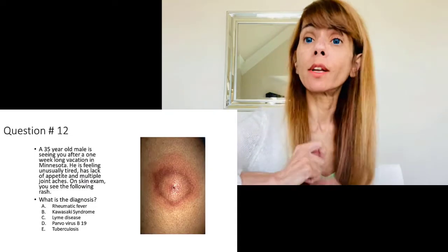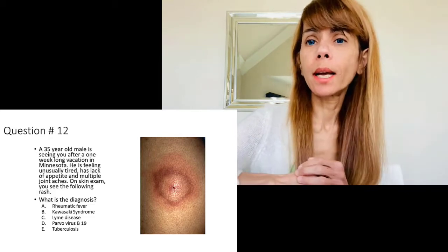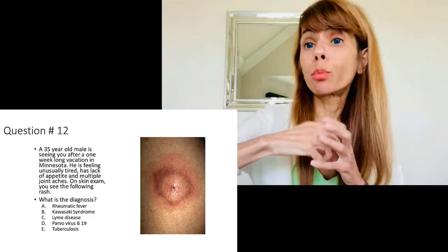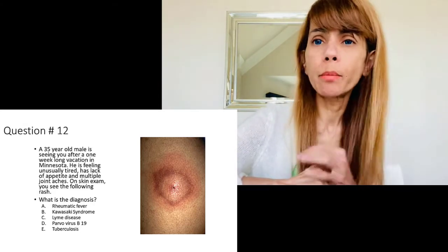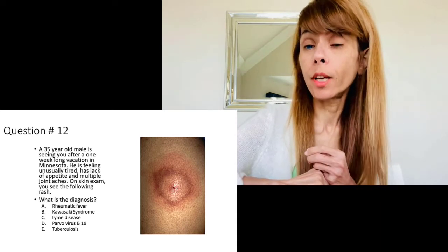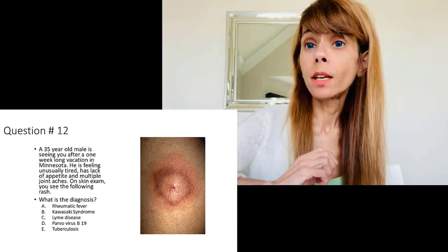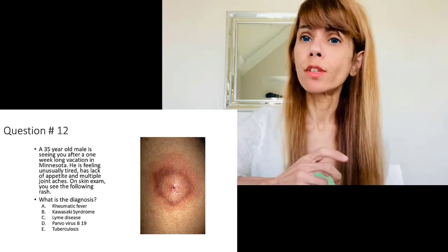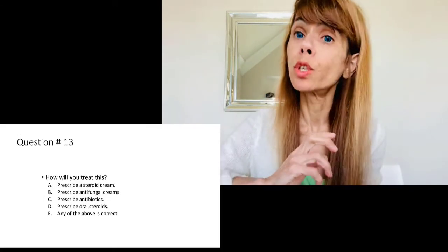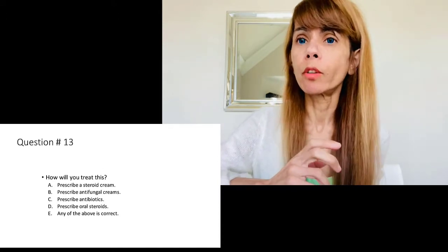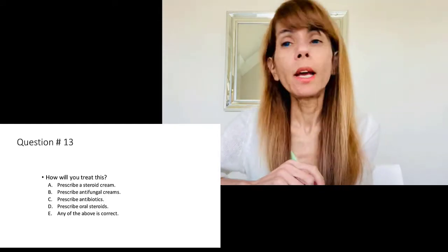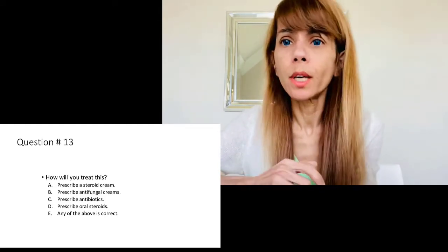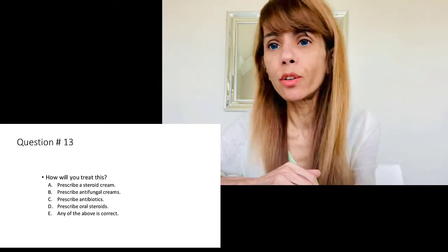Question number twelve is a 35-year-old male who went to Minnesota on vacation, came back, and now has a spreading rash with malaise, fatigue, and joint aches and pains. This is erythema migrans — the rash associated with Lyme disease. Question thirteen asks how to treat it. Lyme disease is treated with antibiotics. There is no role for steroid cream, biopsy, TB test, or dermatology referral.